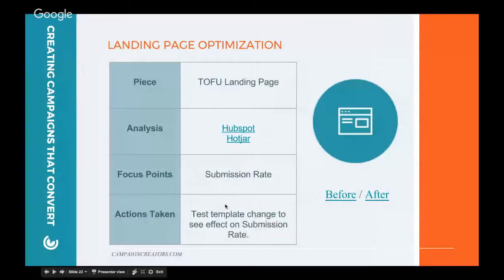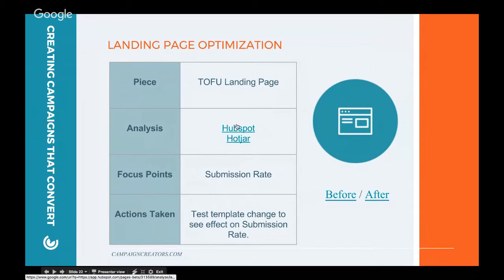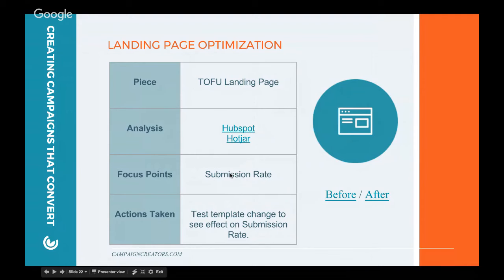Moving on to landing page optimization, we chose to do it on the top-of-funnel landing page, the first one visitors arrive on in the campaign. We did analysis using HubSpot and also Hotjar. We saw that our submission rate was a lot lower than it should be, and this was partly due to a large percentage of mobile users reaching our page and not seeing our form. We reached this conclusion mainly from Hotjar by taking a look at user recordings.